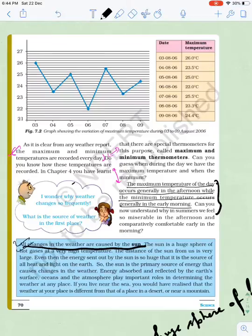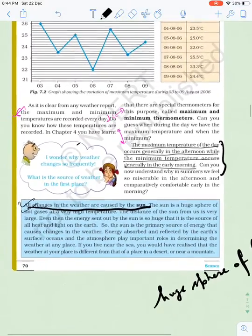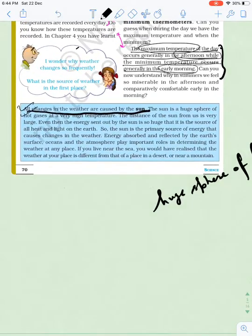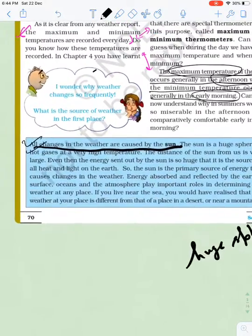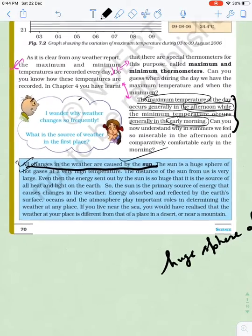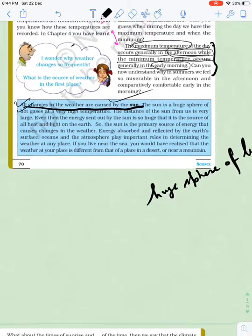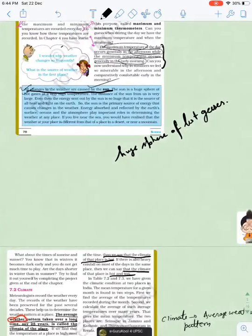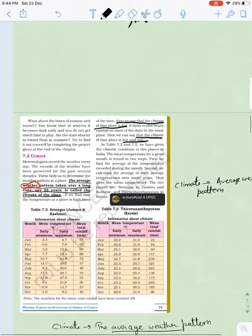Maximum temperature at a place occurs basically in the afternoon session, and minimum temperature occurs in the early morning session, because the sun has a very strong effect. It's also given here that all changes in weather are caused by the sun. The sun is a huge sphere of gases with very high temperature.